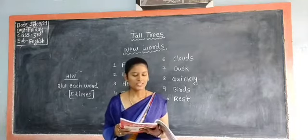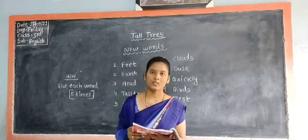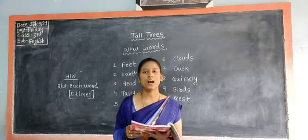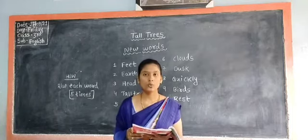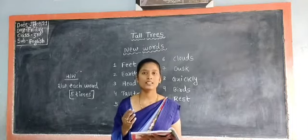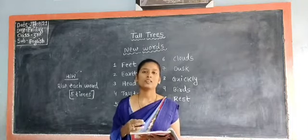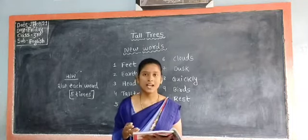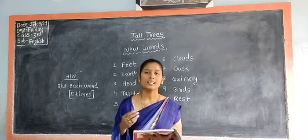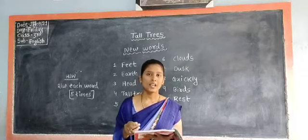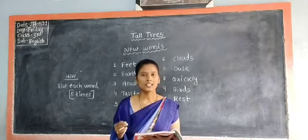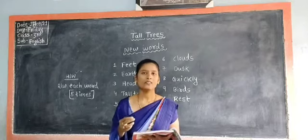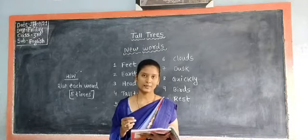We human beings have a face, eyes, nose, head, hands, and legs. In the same way, tall trees also have all these things.